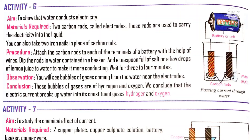Now the circuit is ready. First, dip the 2 rods into the solution, and connect the ends of the rods to the 2 terminals of the battery with copper or aluminium electric wire. After a few minutes, what do you observe? We can observe that some bubbles are arising at both rods.